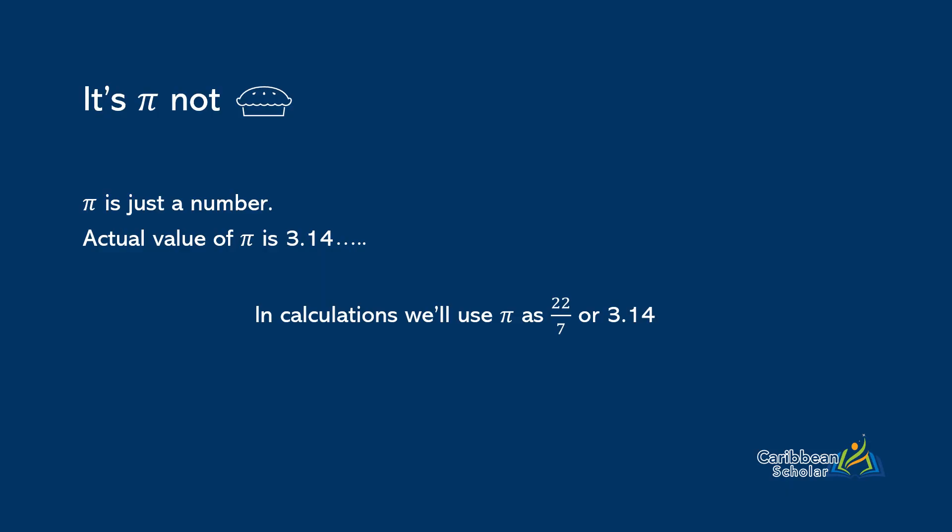Let's see some examples. So here we have a circle of radius 12 centimeters. We want to find the area and the circumference. So first we do the area. The area of the circle is πr². So we do 3.14 times 12 squared, which gives us our final answer of 452.16 centimeters squared.